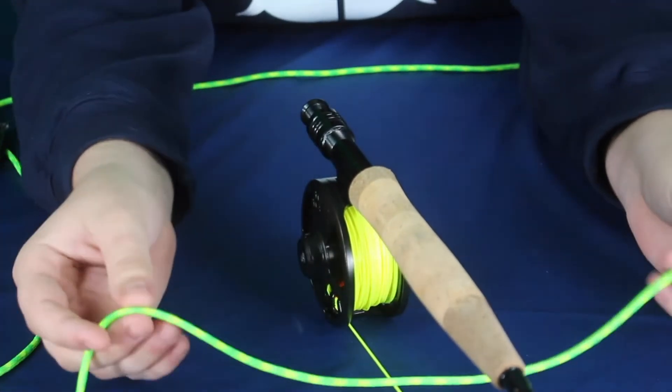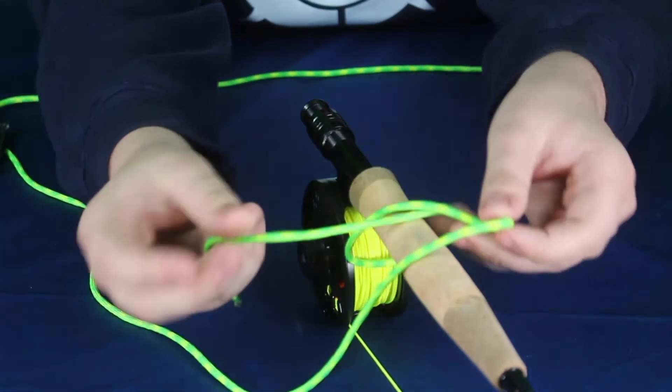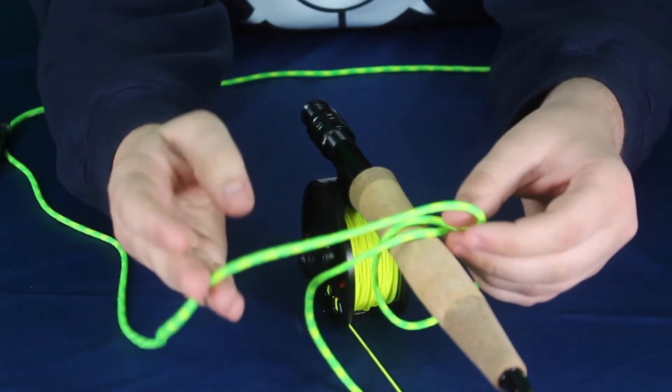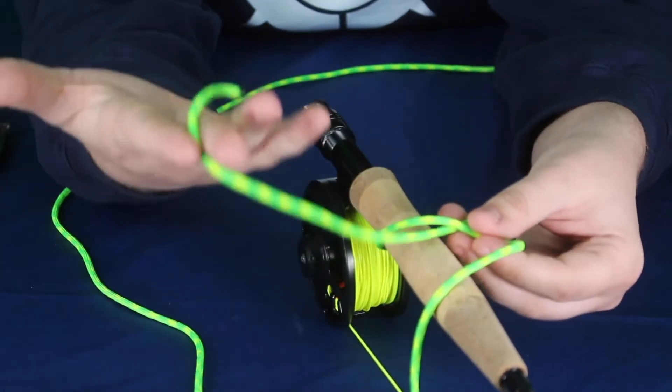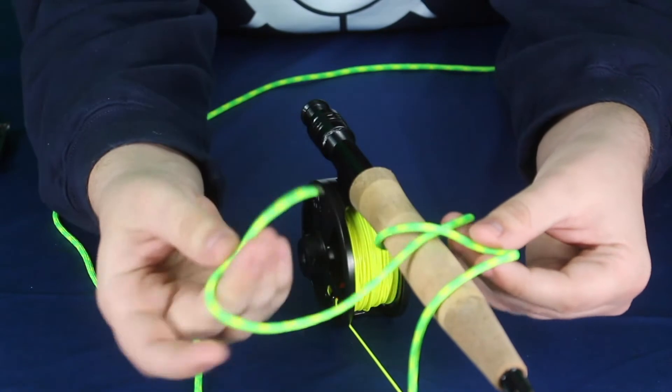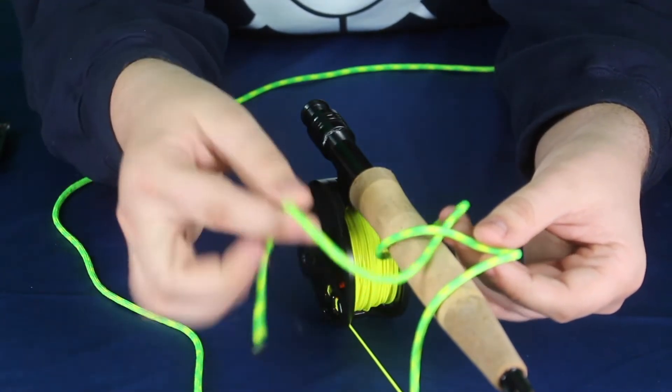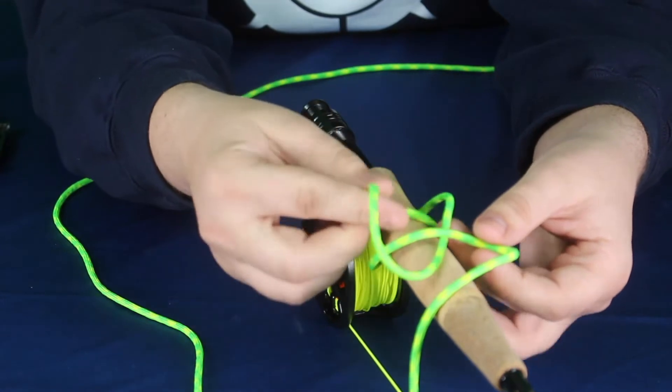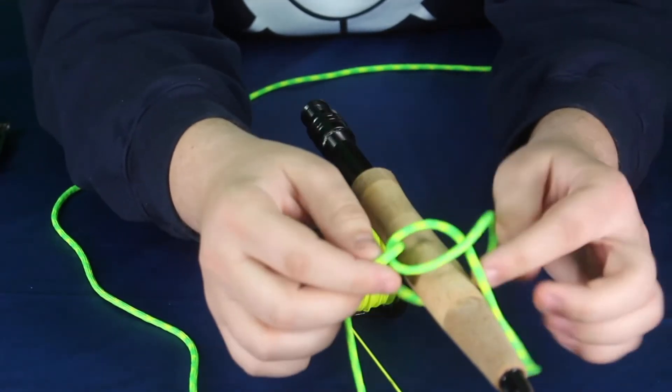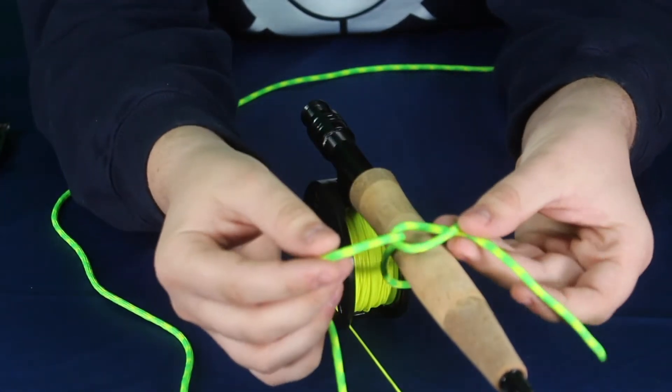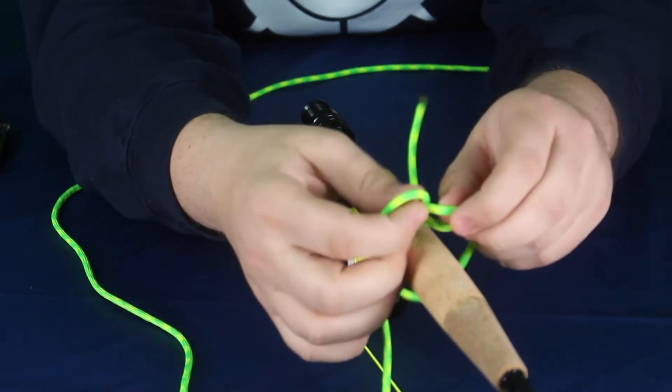Now first thing you're going to do is you want to wrap your line around the handle and give yourself a nice tail. Now the Arbor Knot is a lot like a half hitch with line moving through it. So make another loop right here with the line going through and feed your tail through that hole.